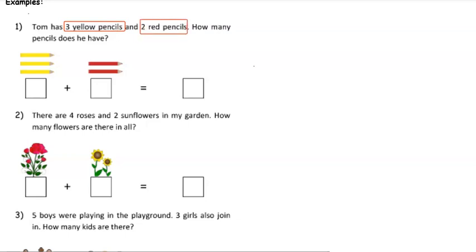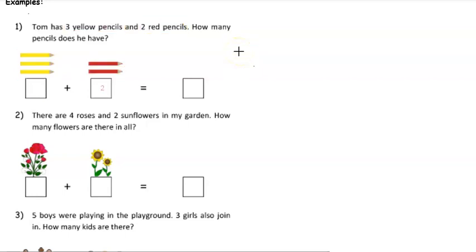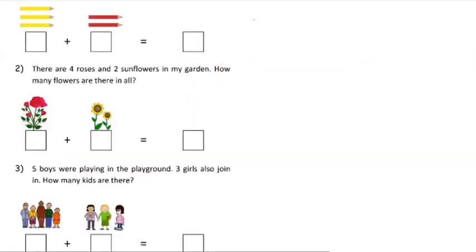Two red pencils. How many pencils does he have altogether? Let's look at these images. Tom has three yellow pencils — that is one, two, and three — and he also has two red pencils. So we have three yellow pencils plus two red pencils. How many pencils does Tom have in total?